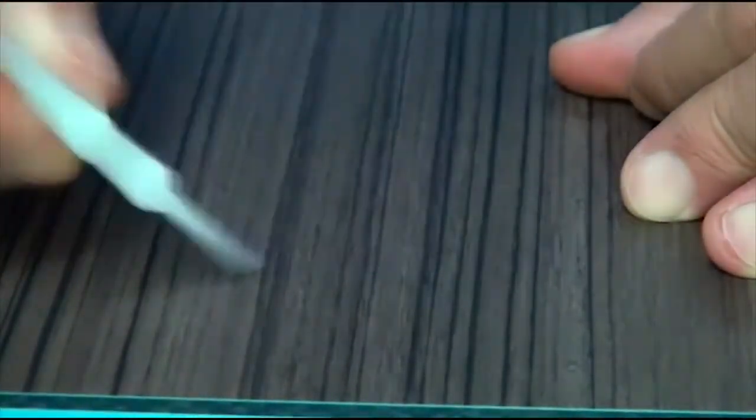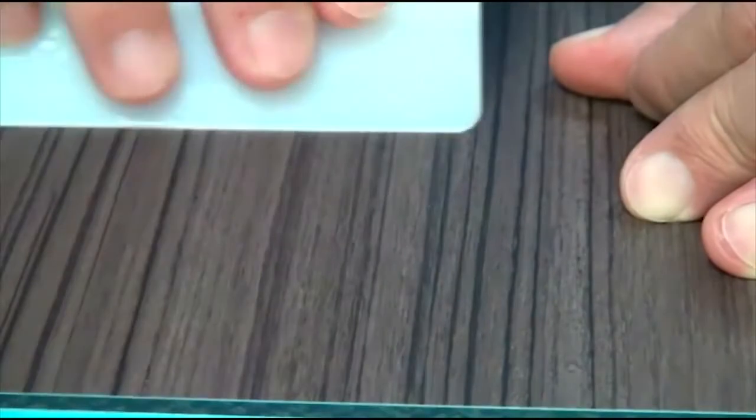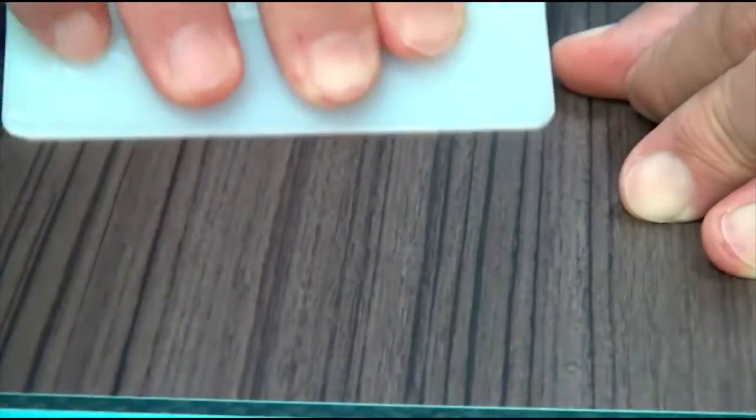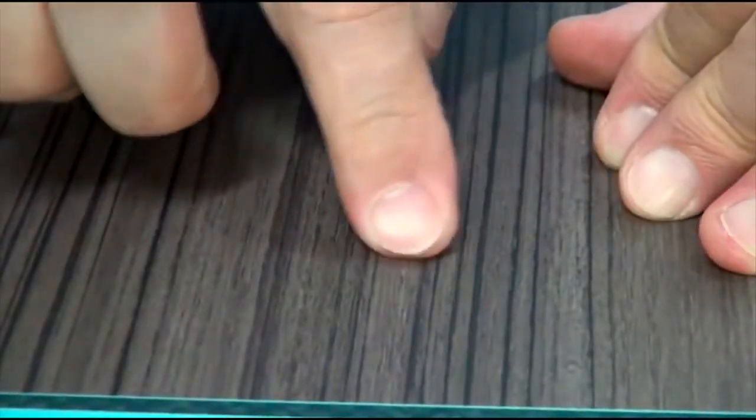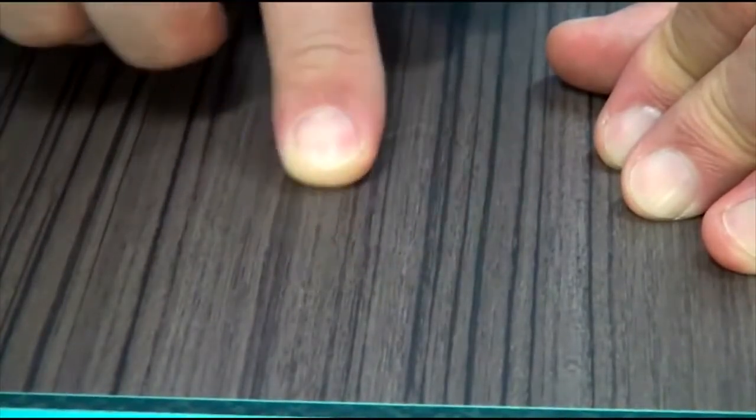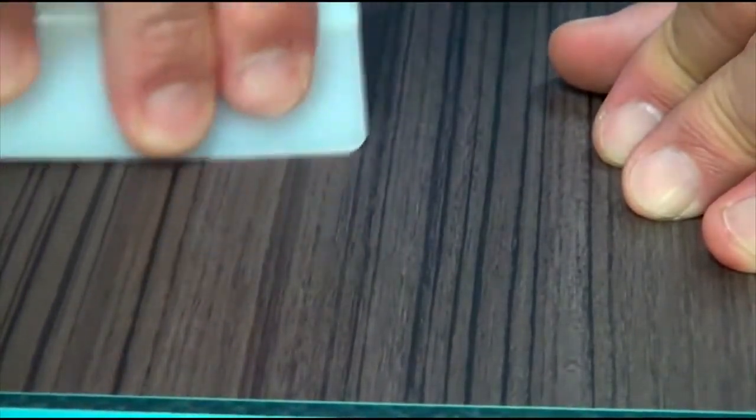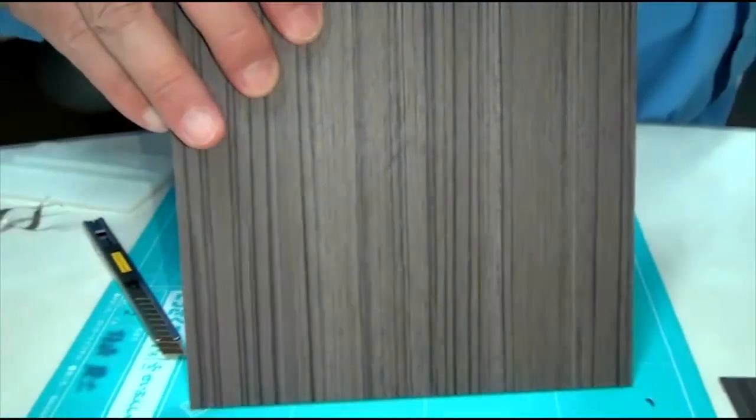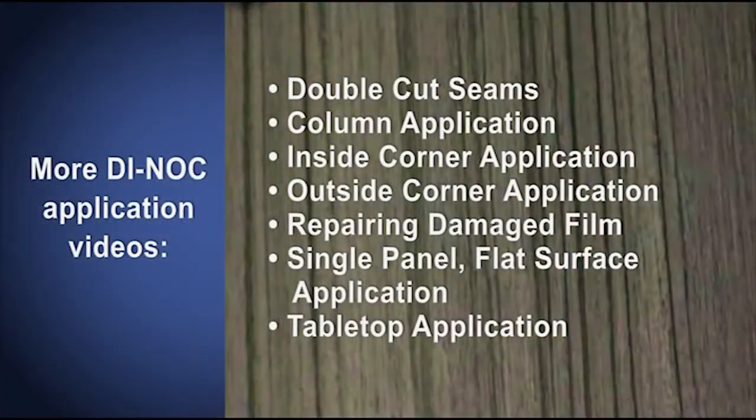Repairing a small area of damaged film is fast and easy with 3M brand Dynok Architectural Finishes. If you encounter damage that is large or has also damaged the substrate below the film, please contact your local 3M Architectural Finishes representative for additional information. And please see our website for more videos on applying 3M's Dynok Brand Architectural Finishes.